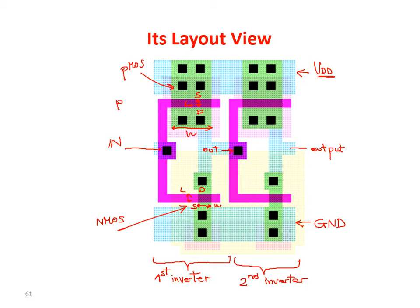The black squares in the layout represent contacts. For example, to connect the drain region to the metal, contacts are created. In all cases where you see black squares, you are electrically connecting two layers that are one on top of the other. To make such a connection, a hole must be opened, which is why we have these black squares.